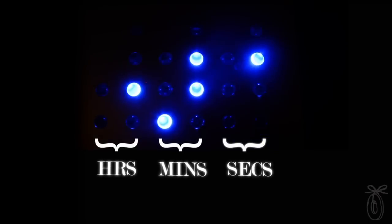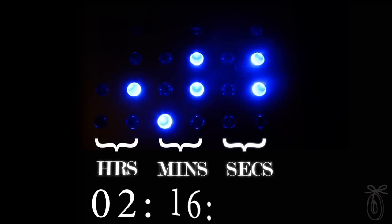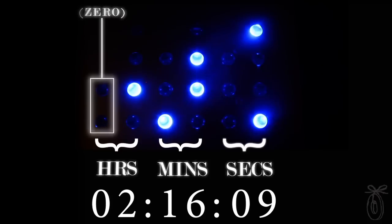Each column represents numbers, and each grouping of two columns represents hours, minutes, and seconds. And if a column has no lights, that represents zero.